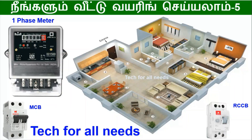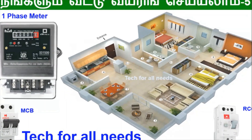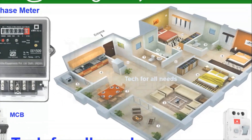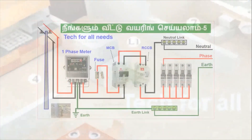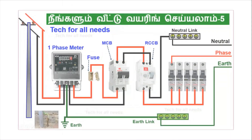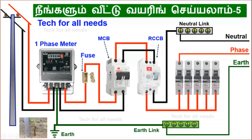We will show you the main board. Main board, main NCP, isolator. We use RCCP and DB box. First, we use load. We use wire size, NCP, RCCP, and DB box.